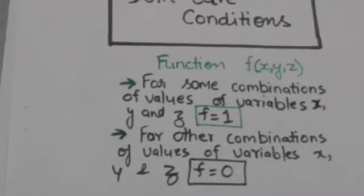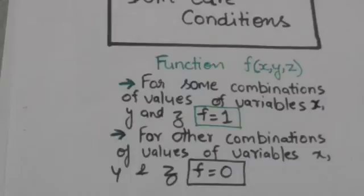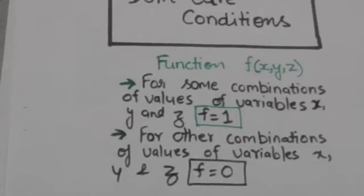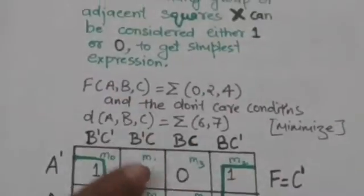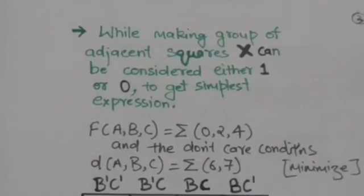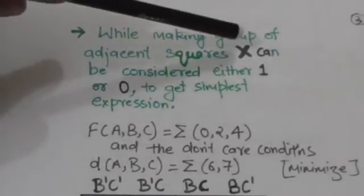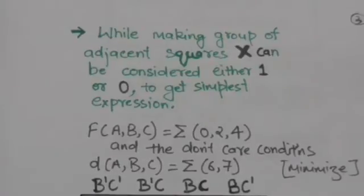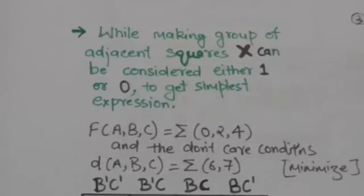In a K-map, such don't care conditions are represented by marking the squares whose minterms represent don't care conditions by an x or cross. While making groups of adjacent squares, x can be considered either one or zero to get the simplest expression. This will be more clear after the following example.